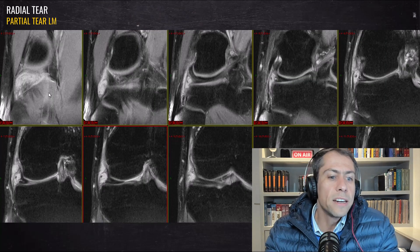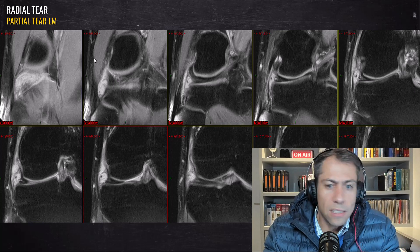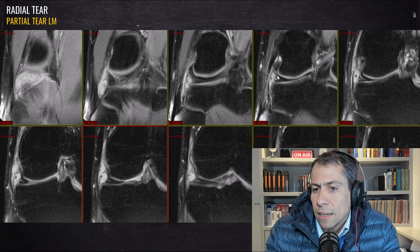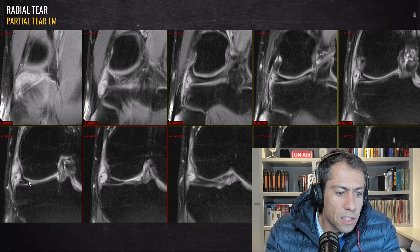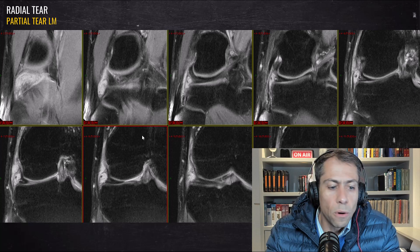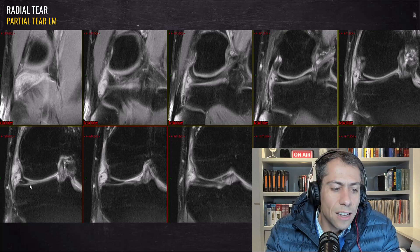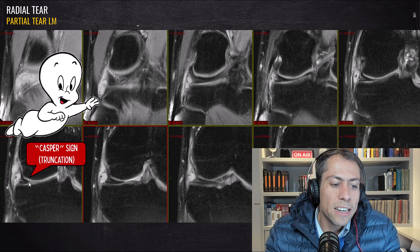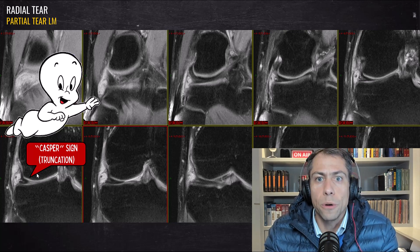That is the cleft sign for partial radial tears — a partial cleft sign. You're not going to see it in all the images because it's a partial tear. Here in this coronal image, we can see the lateral meniscus body. The meniscus is truncated right here, and here it returns to its normal morphology. We can't see the inner portion of the meniscus — that's the Casper sign, the truncation of the meniscus, a sign of a partial radial tear.